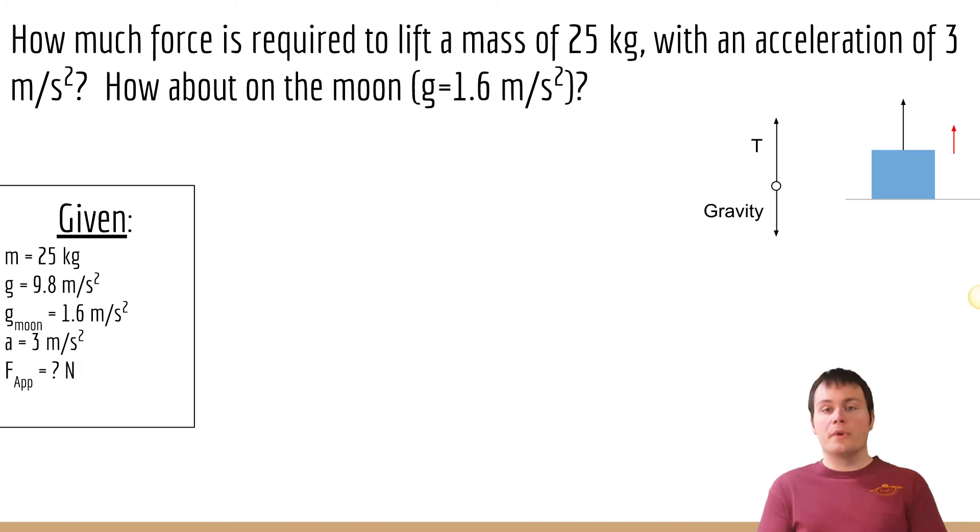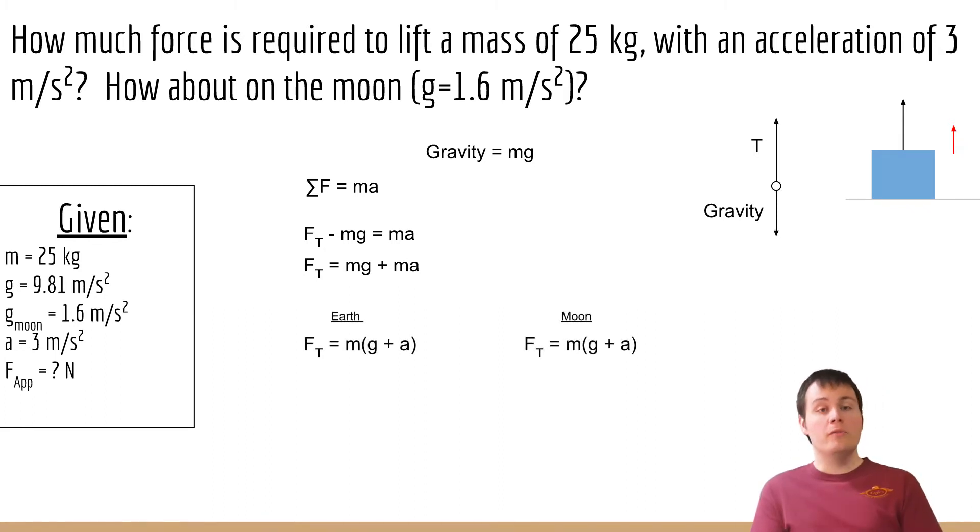The overall equation we're going to use for this is force equals mass times acceleration, which is Newton's second law of motion. The overall acceleration of the object equals the force of the lift minus the force of gravity. However, the acceleration due to gravity is different on the Earth and on the Moon. We know almost all of these variables, so we can plug them right into that equation.